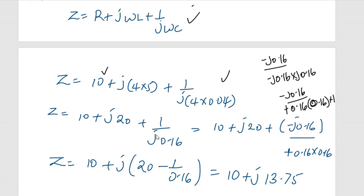So it will be j20. Here is a negative, so it will be minus 1 divided by 0.16. Because here you have negative j0.16 divided by 0.16 times 0.16. One of them cancels and you remain with negative j divided by 0.16.